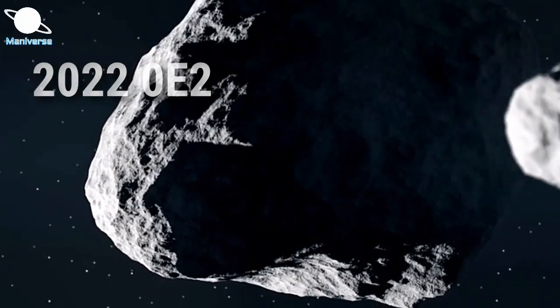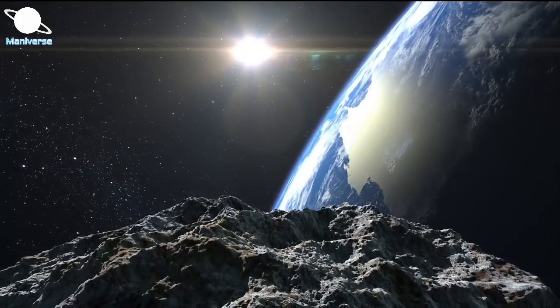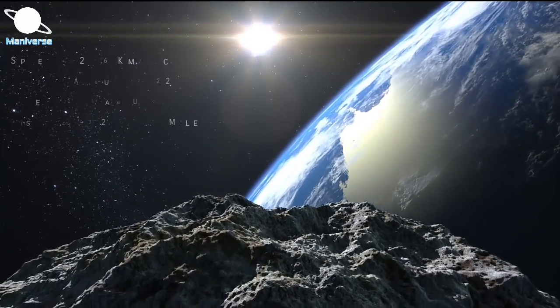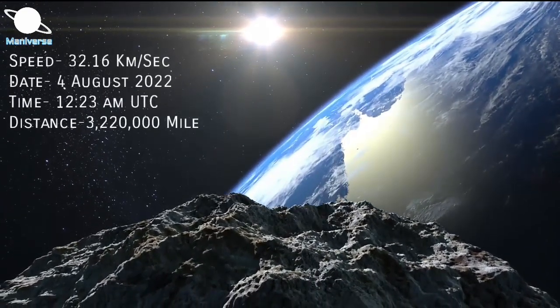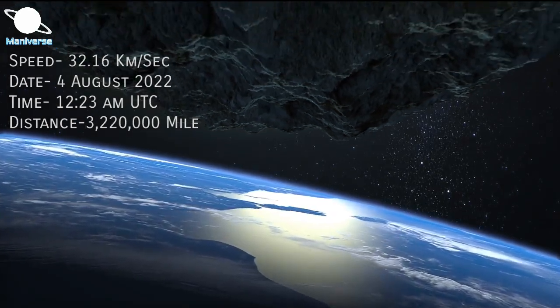It was discovered by astronomers just a few days ago. It is seen as potentially dangerous due to its size and distance from our planet. The asteroid is set to fly past Earth on 4th August at 12:23 AM UTC with a speed of about 32.16 km per second.